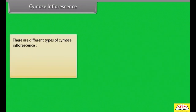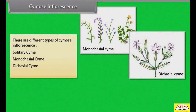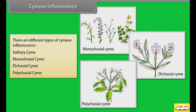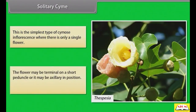There are different types of cymose inflorescence: Solitary Cyme, Monochasial Cyme, Dichasial Cyme, and Polychasial Cyme. Solitary cyme is the simplest type of cymose inflorescence where there is only one single flower. The flower may be terminal on a short peduncle or it may be axillary in position. Example: Thespesia.